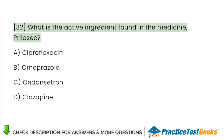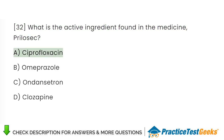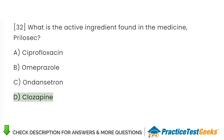What is the active ingredient found in the medicine Prilosec? A. Ciprofloxacin. B. Omeprazole. C. Ondansetron. D. Clozapine.